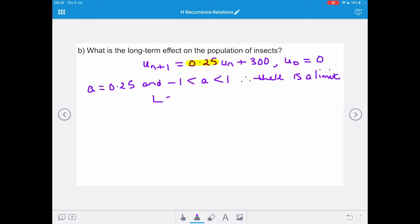So we can find that limit using L equals b over 1 minus a, and then substituting in our values. So b is 300 and 1 minus 0.25 on our denominator. And that gives us 300 divided by 0.75, which gives us a limit of 400.